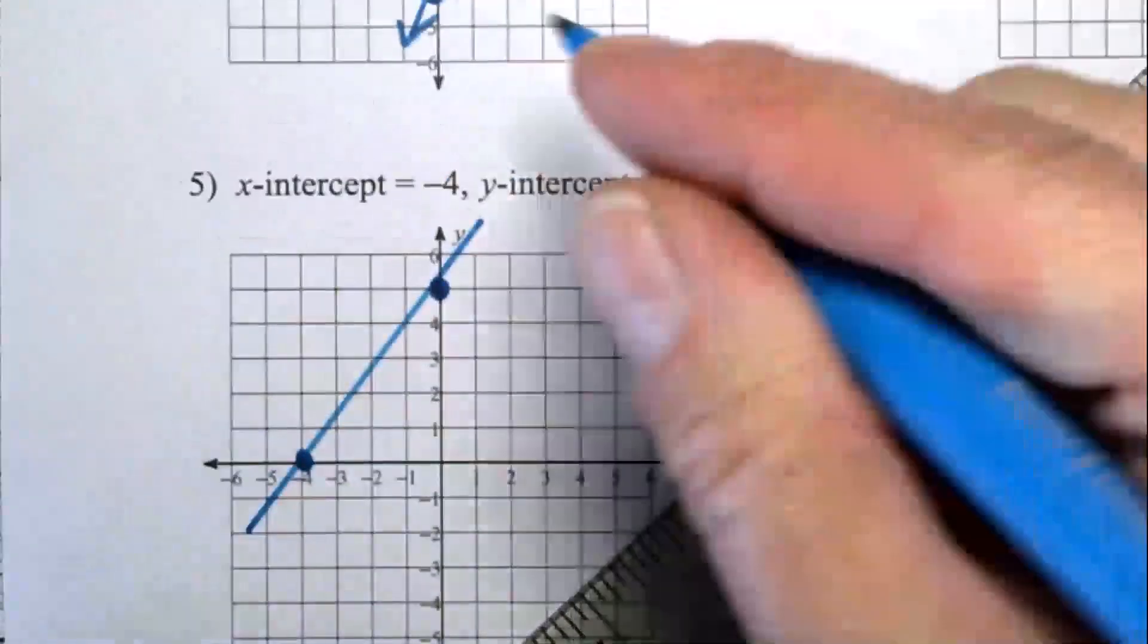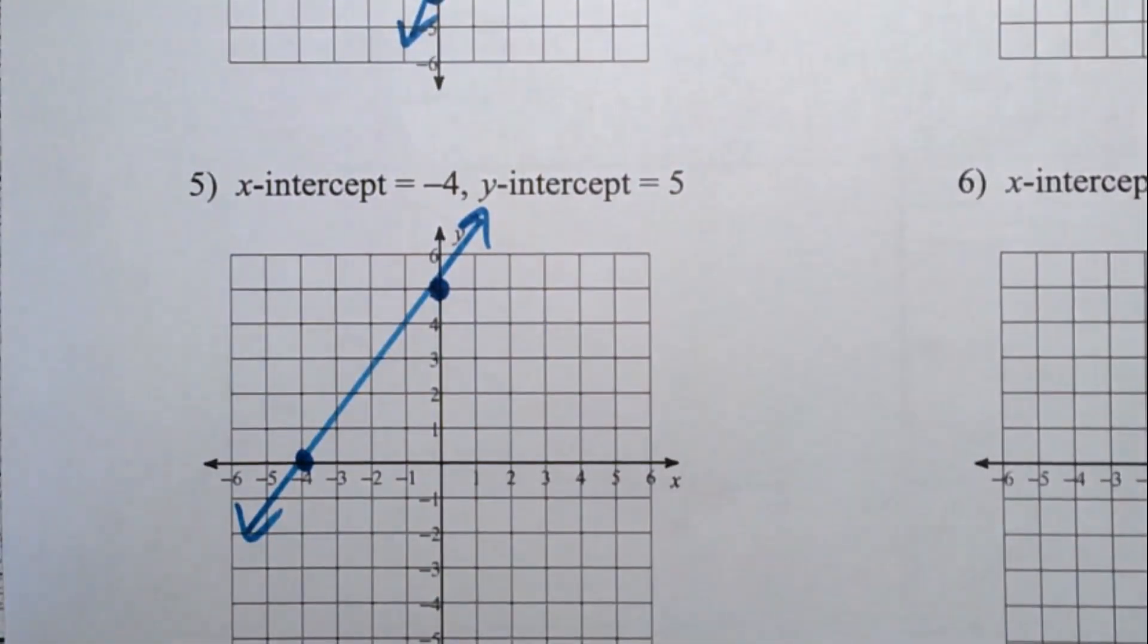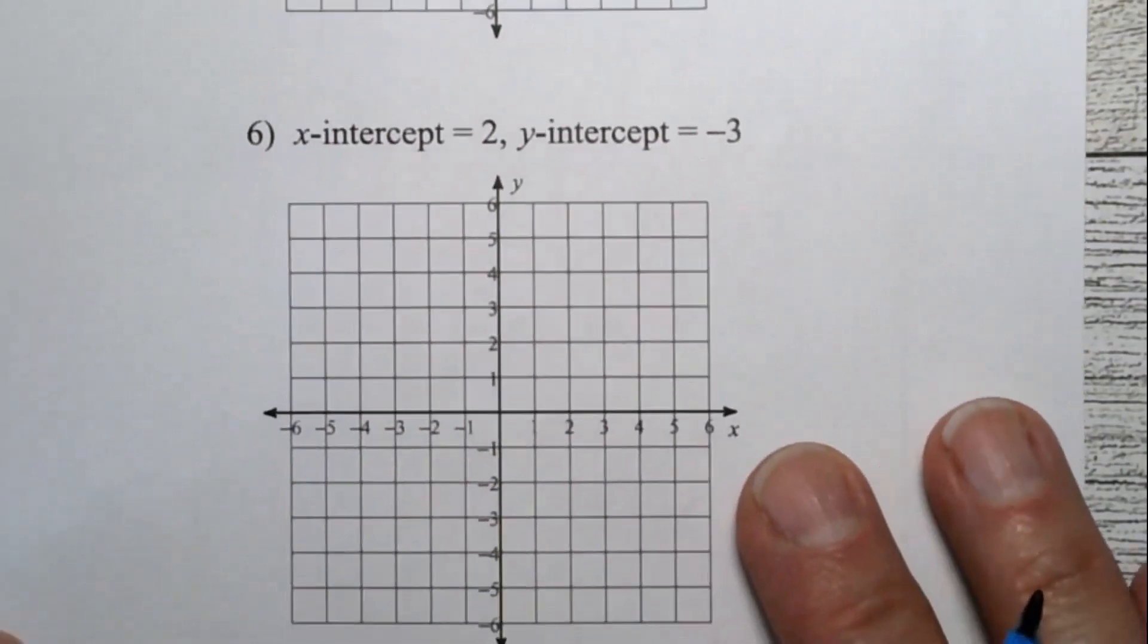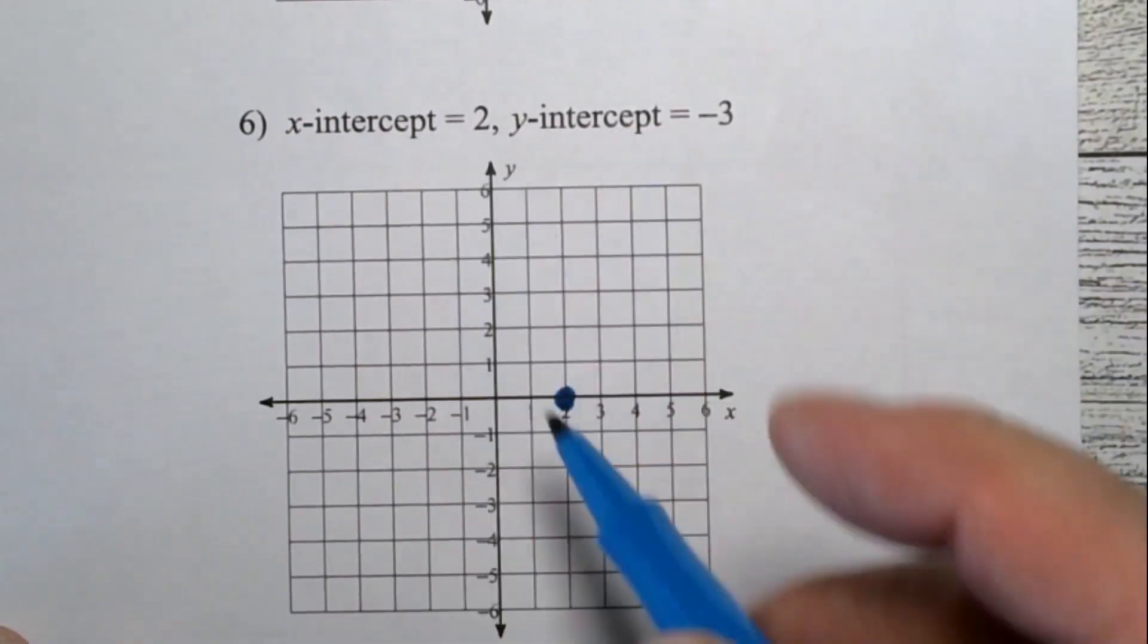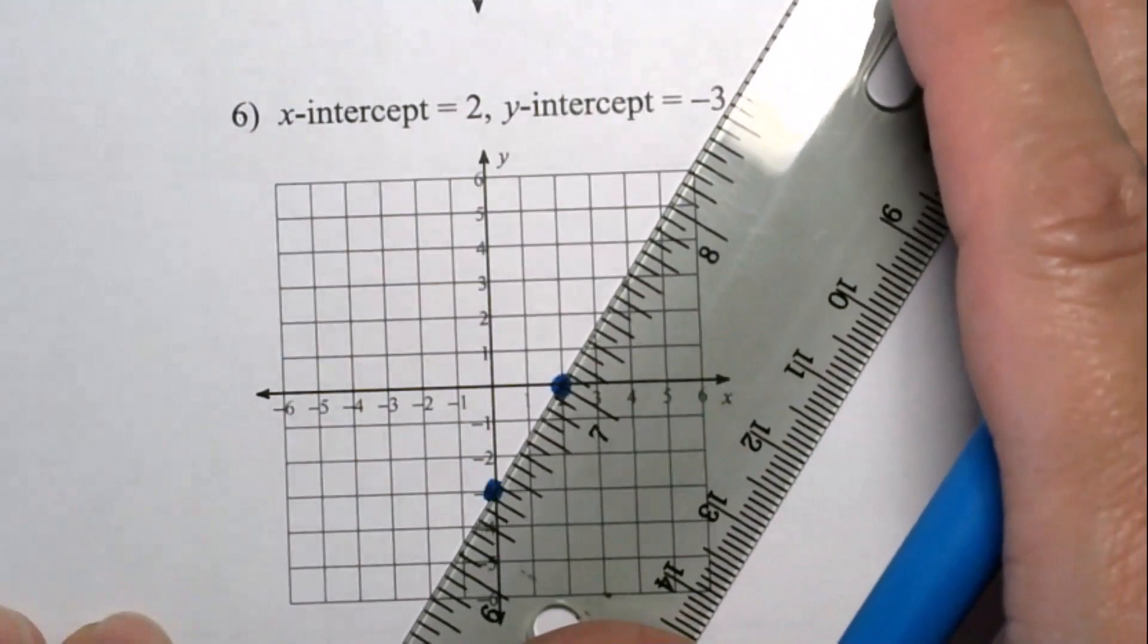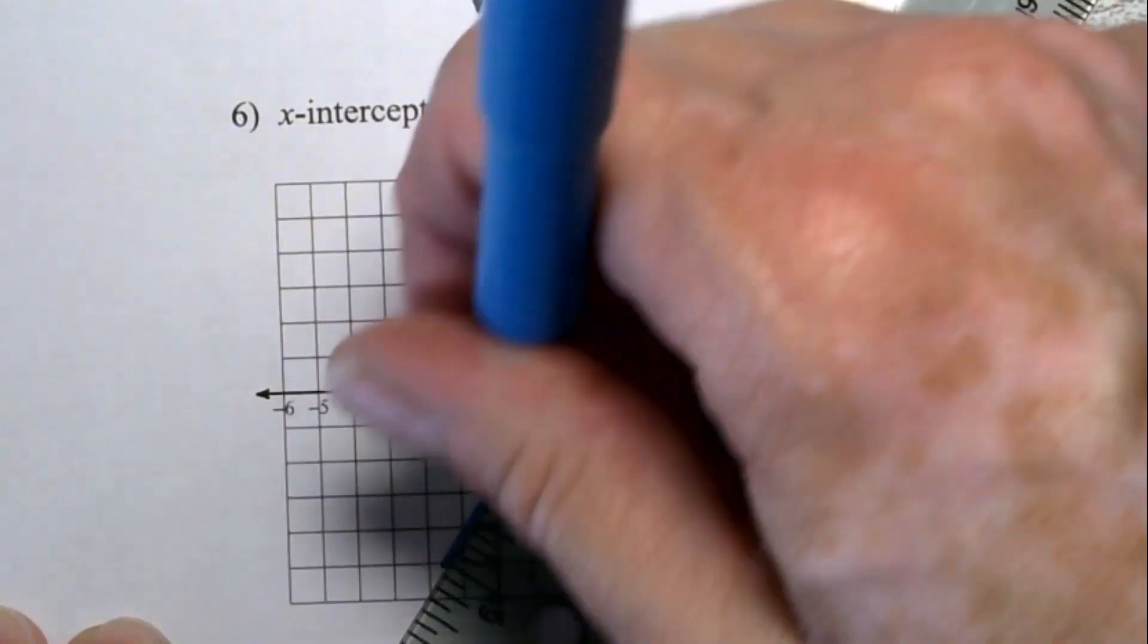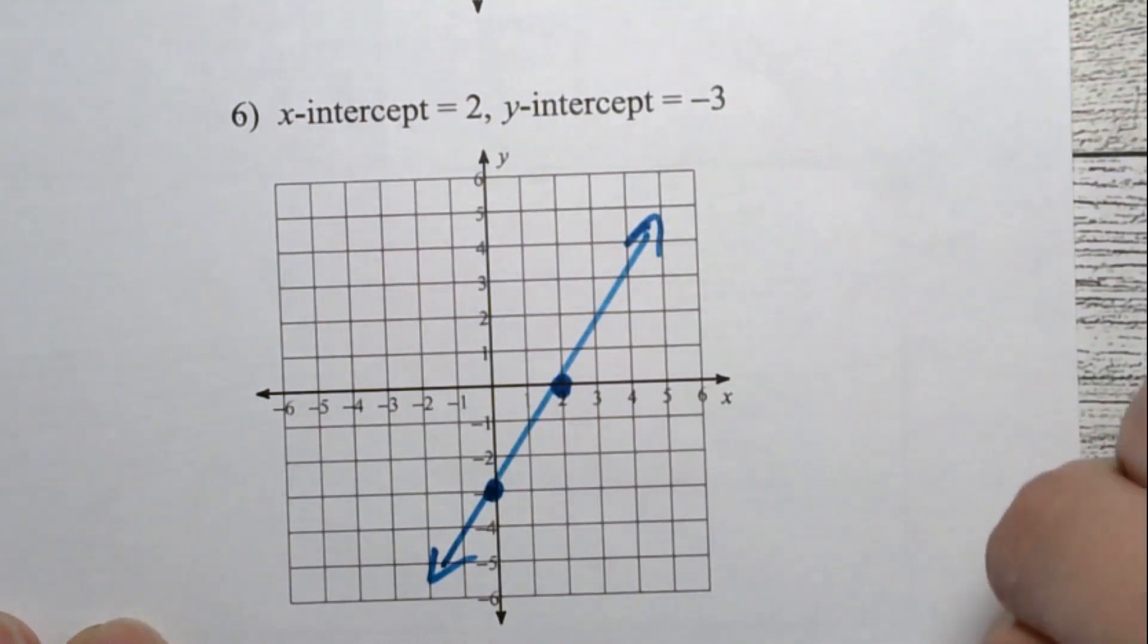That line is drawn. And number six is another one like that. The x-intercept is a positive two. The y-intercept is a negative three. And connect the dots. That's the first six. We have six more to go through.